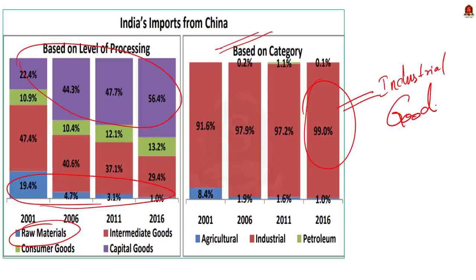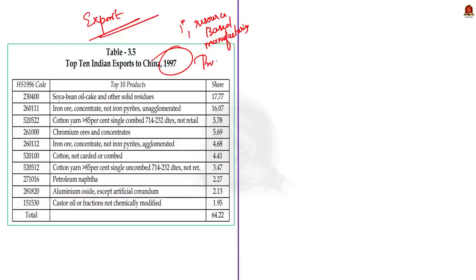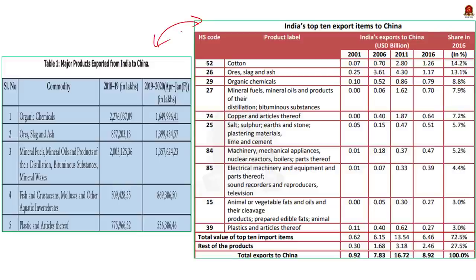Now let us see exports from India to China. This table shows exports from India in the initial period of 1997 — all products were either primary products or resource-based manufacturing products. The largest exporting item was soya bean oil cake and other solid residues, and the second was iron ore and its concentrates. The recent trend in exports from India to China now majorly includes organic chemicals, ores, slags and ash, fish and crustaceans and other aquatic invertebrates, and plastics and related articles.